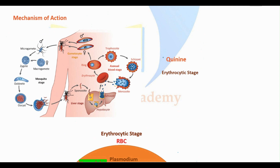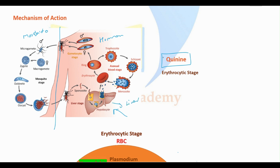Talking about the mechanism of action of quinine: malaria has two phases, one happening within the human and the other in the mosquito. Quinine affects a stage happening within the human. There are different phases — one affecting the liver, and from the liver it enters the RBC stage. Quinine affects the RBC stage, also called the erythrocytic stage, where proliferation of the Plasmodium species happens within the RBC.